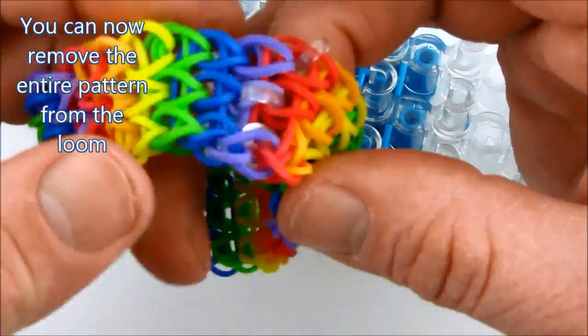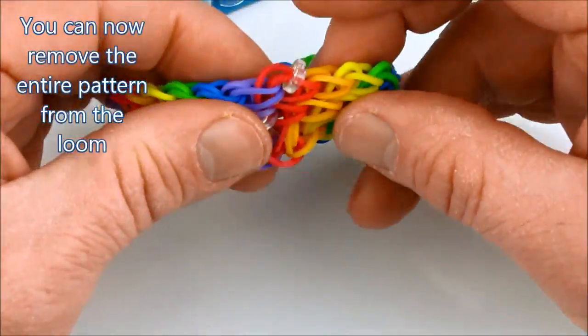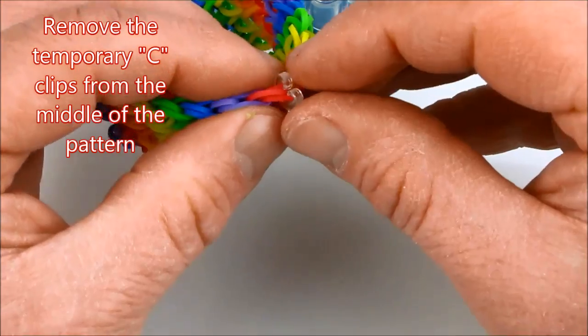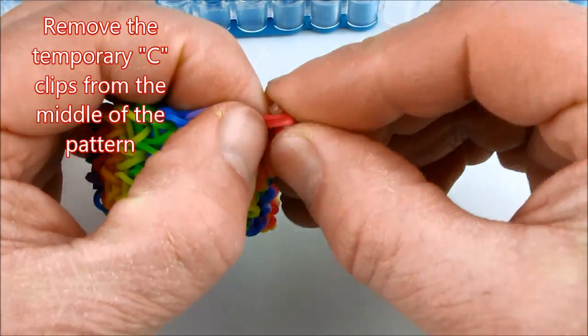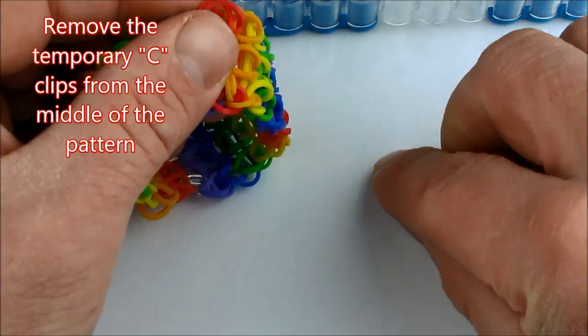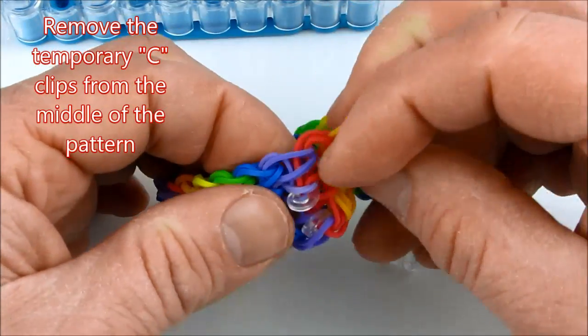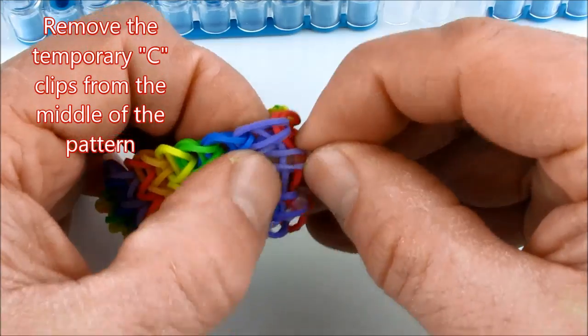Now there's two sets of clips on the bracelet right now. We want to remove the temporary c-clips that were in the middle of the pattern. These temporary clips are just sitting loose within the bracelet so they can be safely removed.